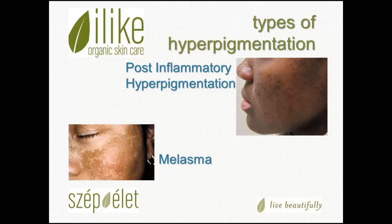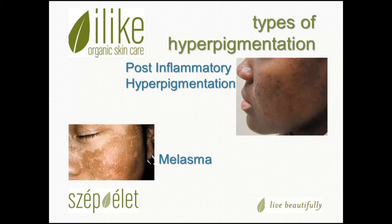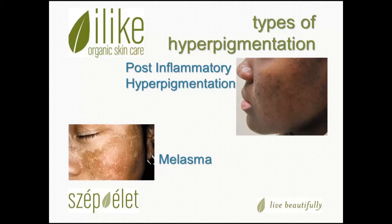Another very common form of hyperpigmentation is melasma, which is hormonally induced pigmentation. This occurs in about 70% of pregnant women, and you'll also hear it called chloasma or pregnancy mask. The coloration is due to changes in estrogen and progesterone levels. It can also be due to thyroid dysfunction, stress, etc. Most often it occurs in brown or olive skin tones. This is a very difficult type of hyperpigmentation to treat and it worsens with sun exposure.